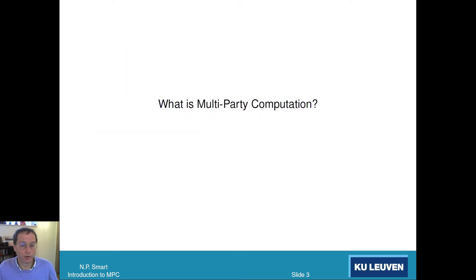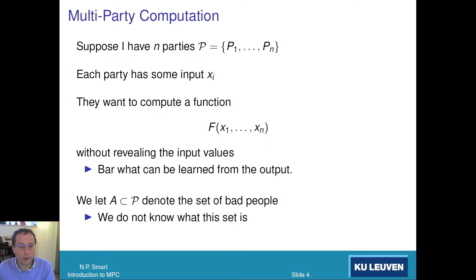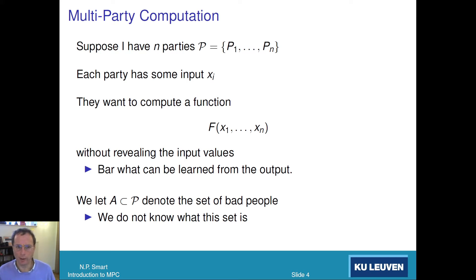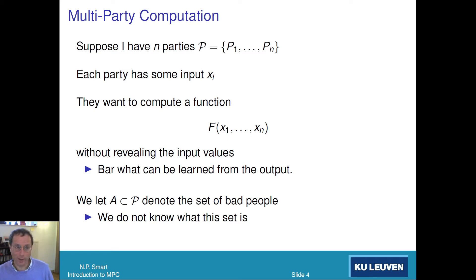The first big question is: what is multi-party computation? It's multiple parties coming together to compute something. Let's assume we've got N parties, P1 to PN, and each has got some input. What we want to do is compute a function of their inputs in a way that doesn't reveal anything about their inputs. Everyone learns the output of the function, but that's the only thing they learn. They can, of course, infer stuff about parties' inputs.